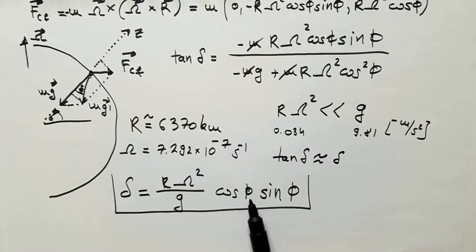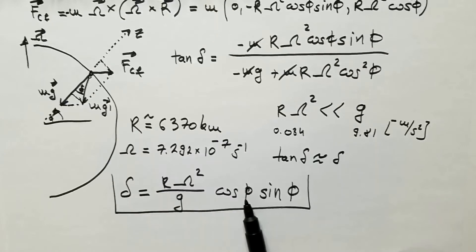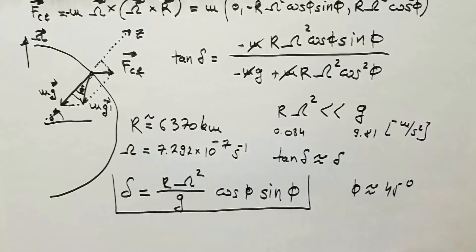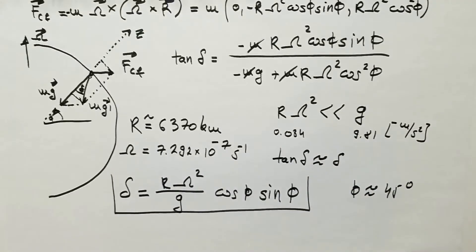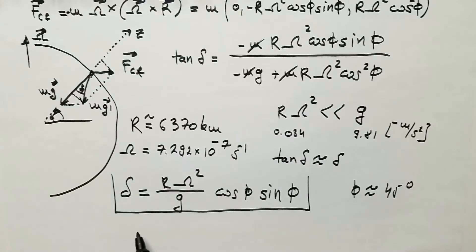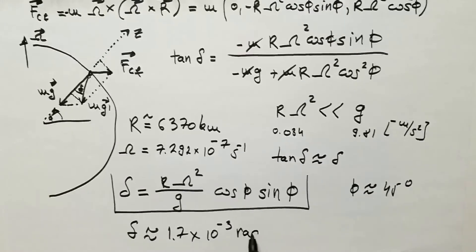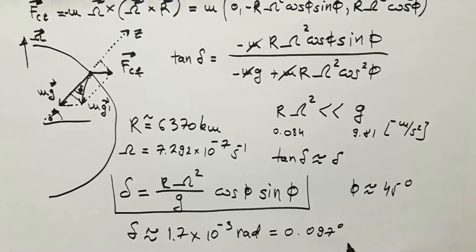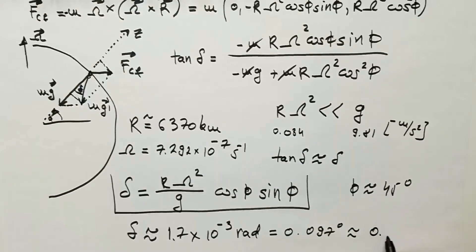Now, I hope you can see that deviation angle doesn't exist at the poles or at the equator because one of these terms is always, cosine or sine phi is always equal to 0 at these two points. Largest deviation is clearly at 45 degrees. And it just happened, I live in Montreal, where phi is indeed approximately 45 degrees. And if you calculate deviation at the latitude of 45 degrees, you will see that the deviation angle delta is approximately, at 45 degrees, 1.7 times 10 to the power of minus 3 radians, or that is equal 0.097 degrees. Or we can round this to one decimal place and say it is approximately 0.1 degrees.